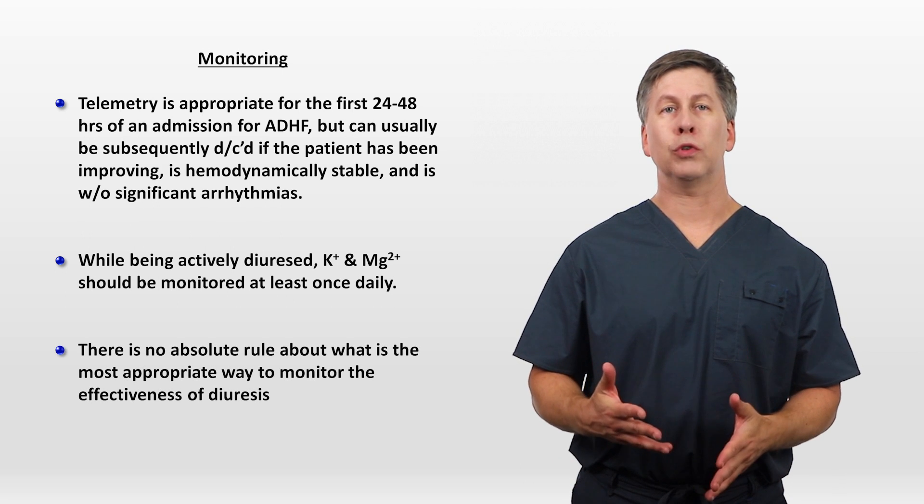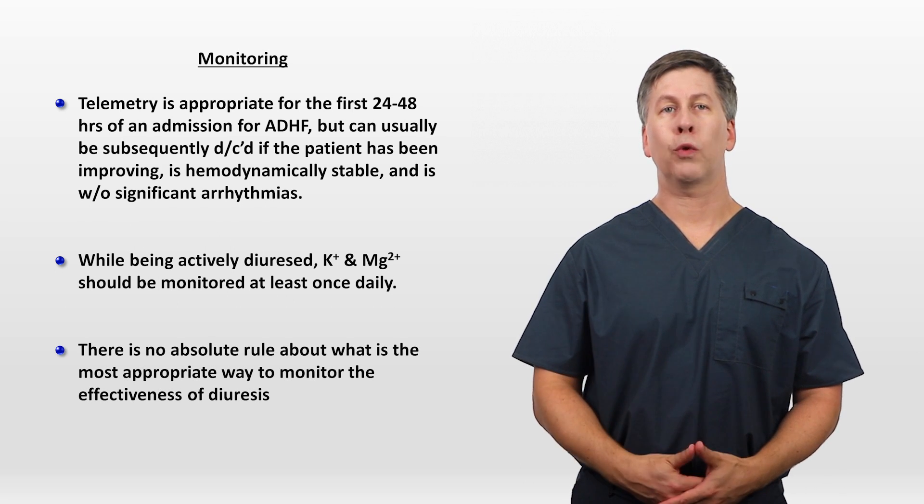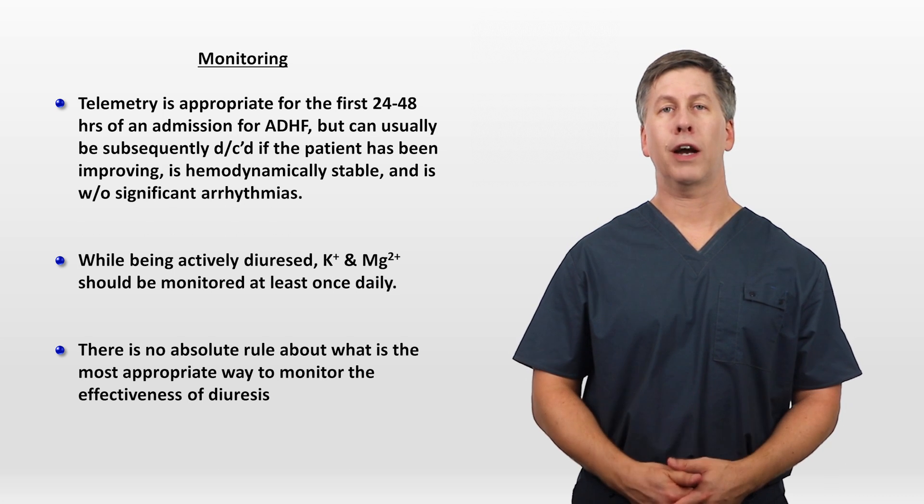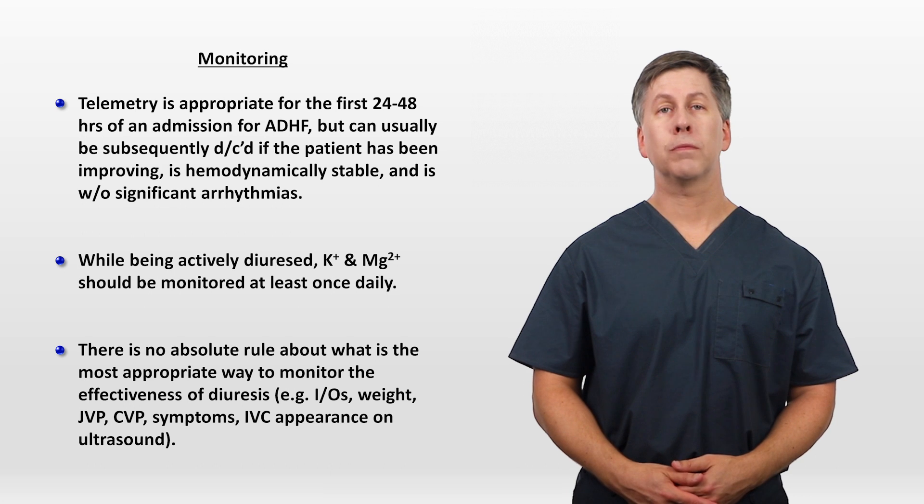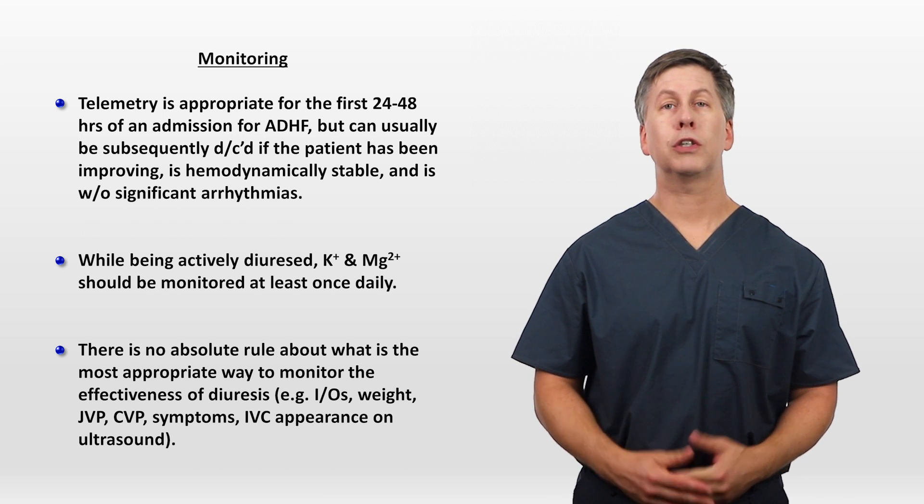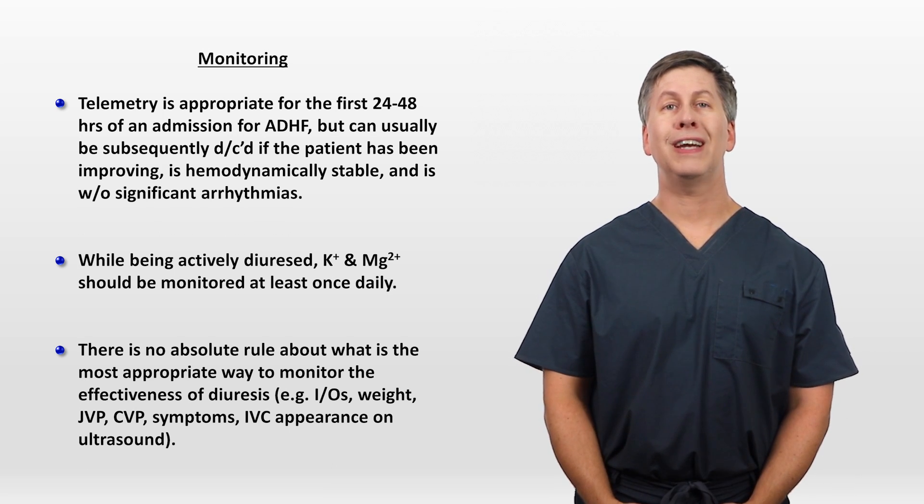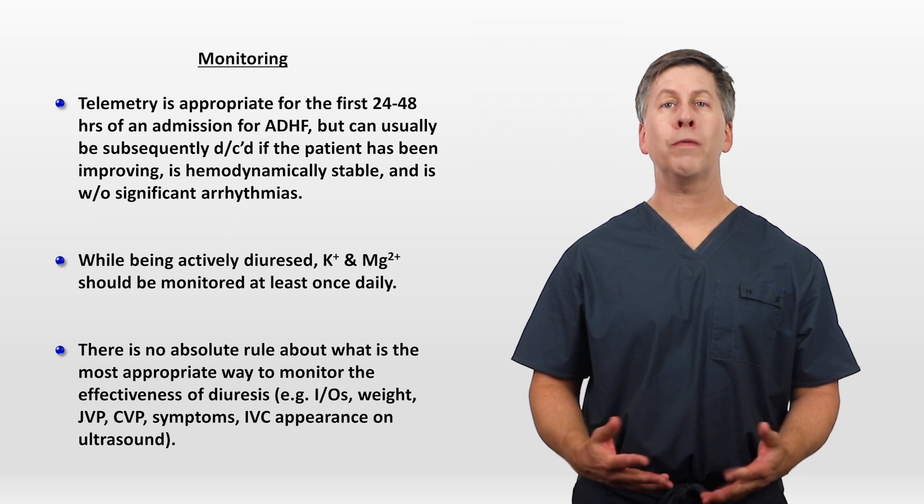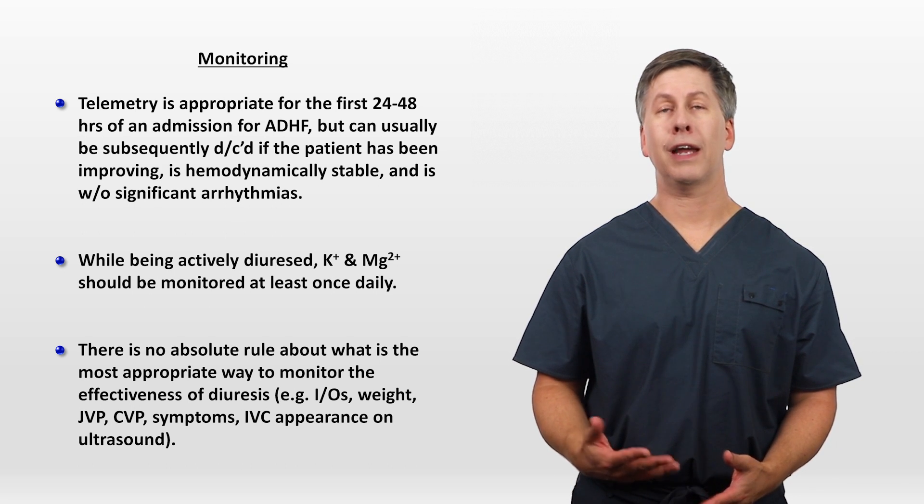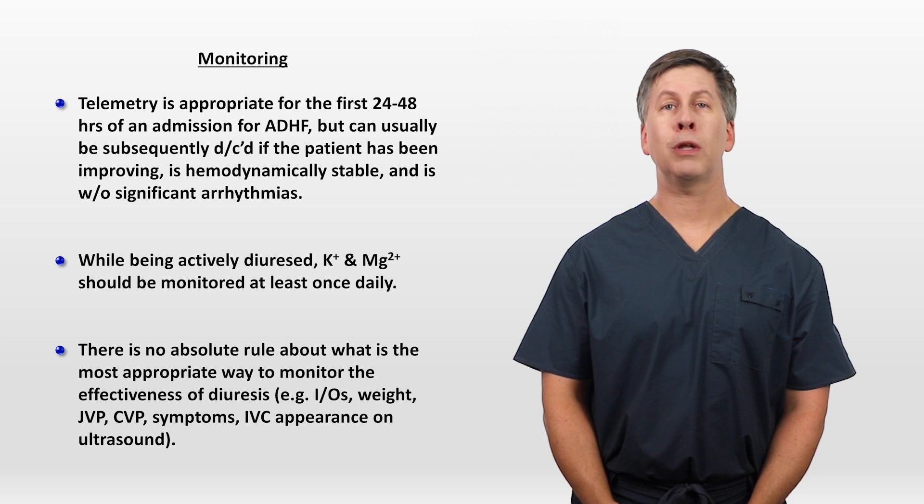There is no absolute rule about what is the most appropriate way to monitor the effectiveness of diuresis. Options include measuring ins and outs, daily weights, serial JVP, continuous CVP via a central line, assessing symptoms of volume overload, and IVC appearance on ultrasound. All of these have differing levels of practicality and accuracy, and it's probably best to not rely only on one single metric.